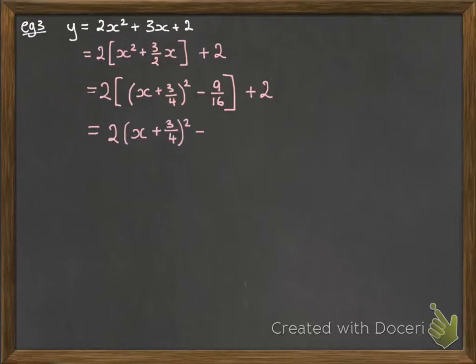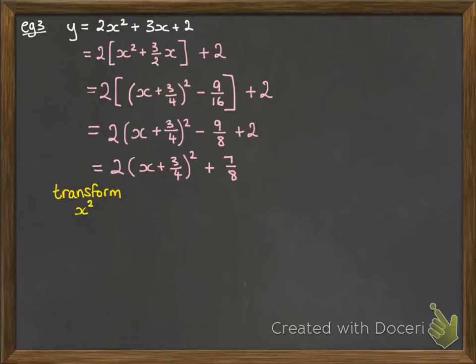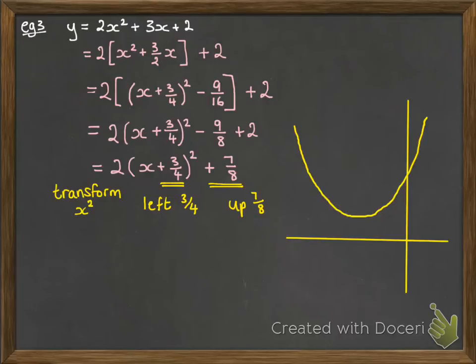We're going to tidy things up a little bit and a little bit more. So now we have something that is a transformation of x². And that transformation is 3/4 to the left and 7/8 up. So if we draw that now it's going to look like this.